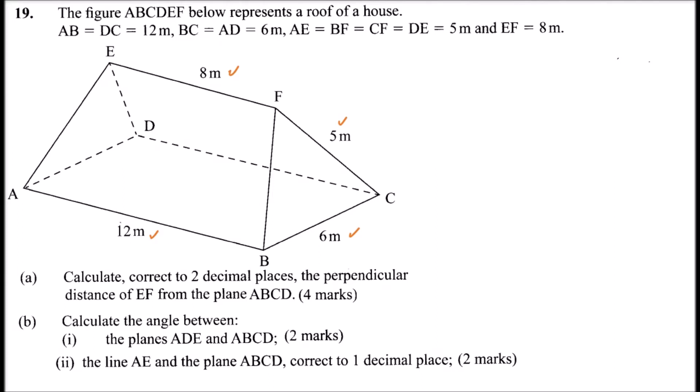I'll call the required height H1, but to find it I also need an intermediate height H2. Calling the foot of the perpendicular from F as N, I need FN. Now, AB is 12 and EF is 8, so the horizontal offset on each side is (12 − 8)/2 = 2 meters.